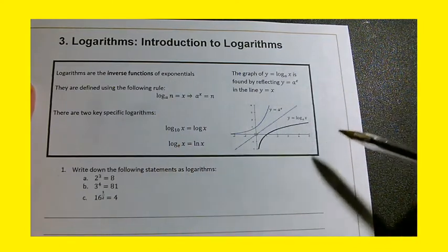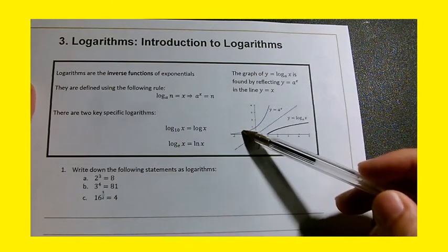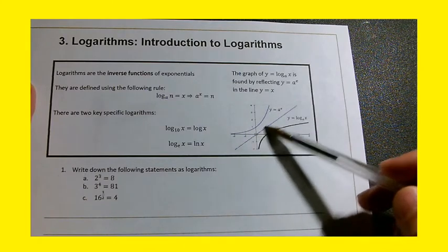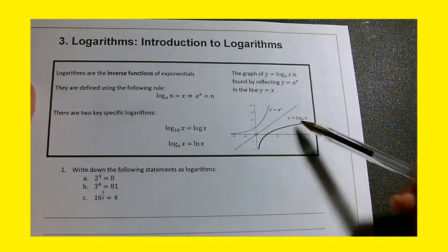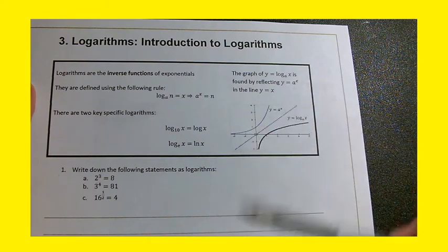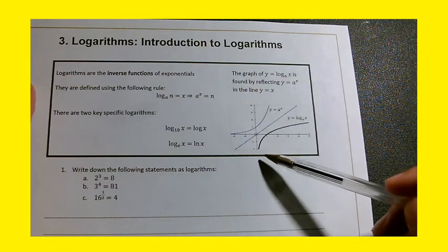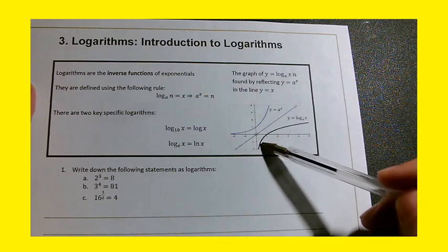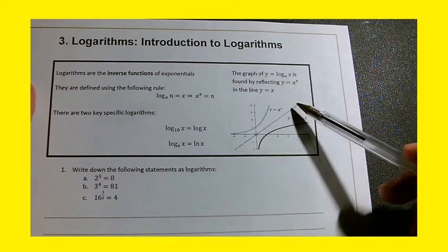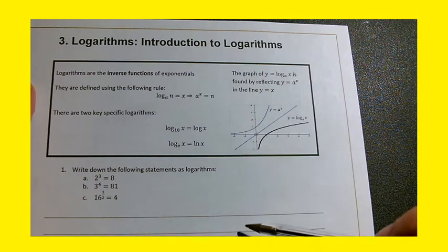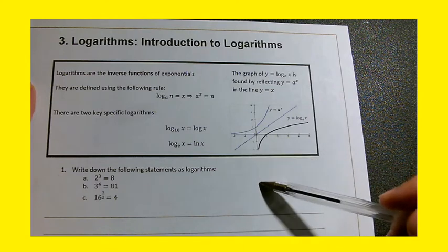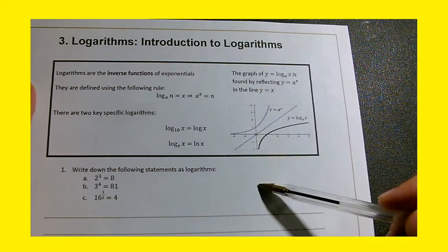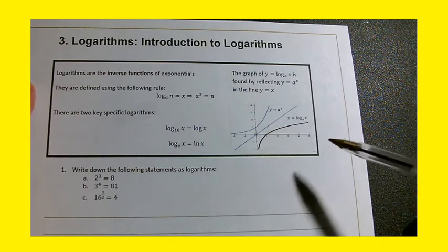But all you need to know at the moment is that if you've got any exponential function, y equals A to the x, then the inverse function log A to the x can be drawn by reflecting the exponential in the line y equals x. So any log graph, log base A, always has this shape. It's a reflection of the exponential in the line y equals x. So that's quite an important graph for you to recognise. And it never touches the y-axis.